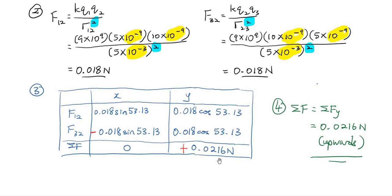The fourth step is the resultant force. The X component is zero, and the Y component is positive — meaning upward. Direction is very important because force is a vector; you must state both magnitude and direction. The magnitude is the calculated value, and the direction is positive Y, which means upward. Thank you.